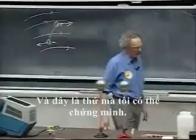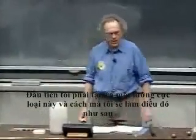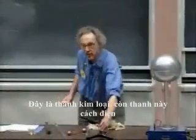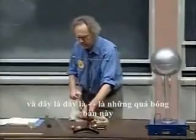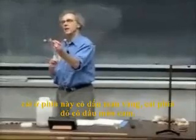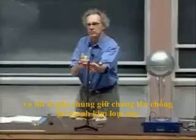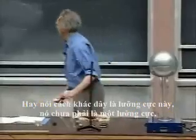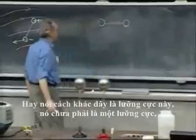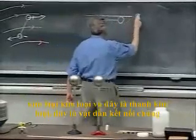And this is something that I can demonstrate. First, what I'm going to do is look at the direction of the field lines. I have to make a dipole of this kind, and the way I will do that is the following. This is a metal bar. This is an insulator. And here are these two ping-pong balls. The one on this side has a yellow marker. The one on that side has an orange marker. And I'm going to attach them, holding them up against this metal bar.